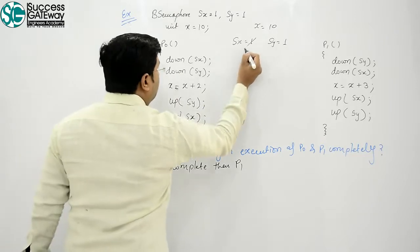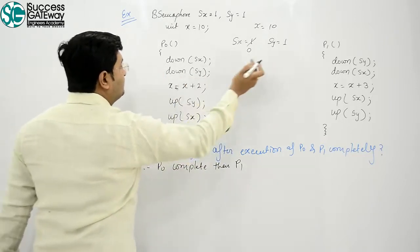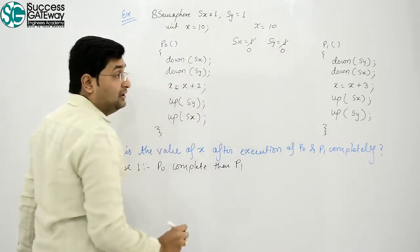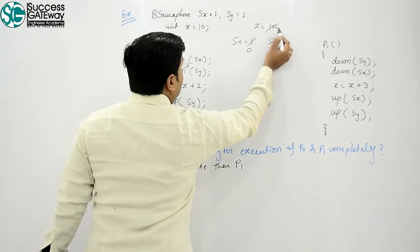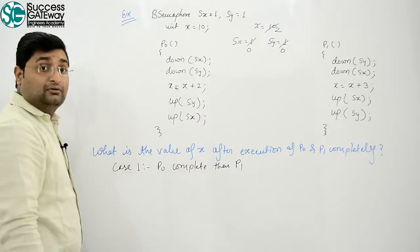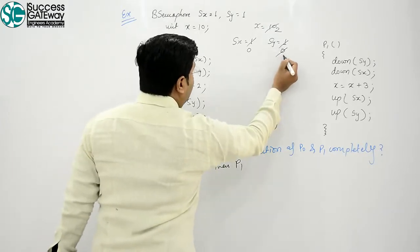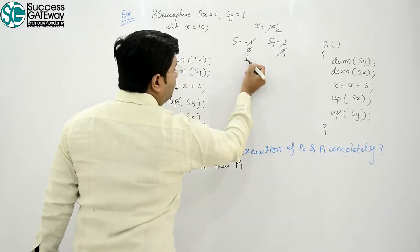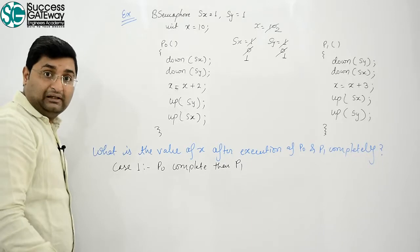P0 downs Sx to 0, then downs Sy to 0. X value becomes x plus 2, which is 12. Well, then up Sy. Then up Sx. Clear.